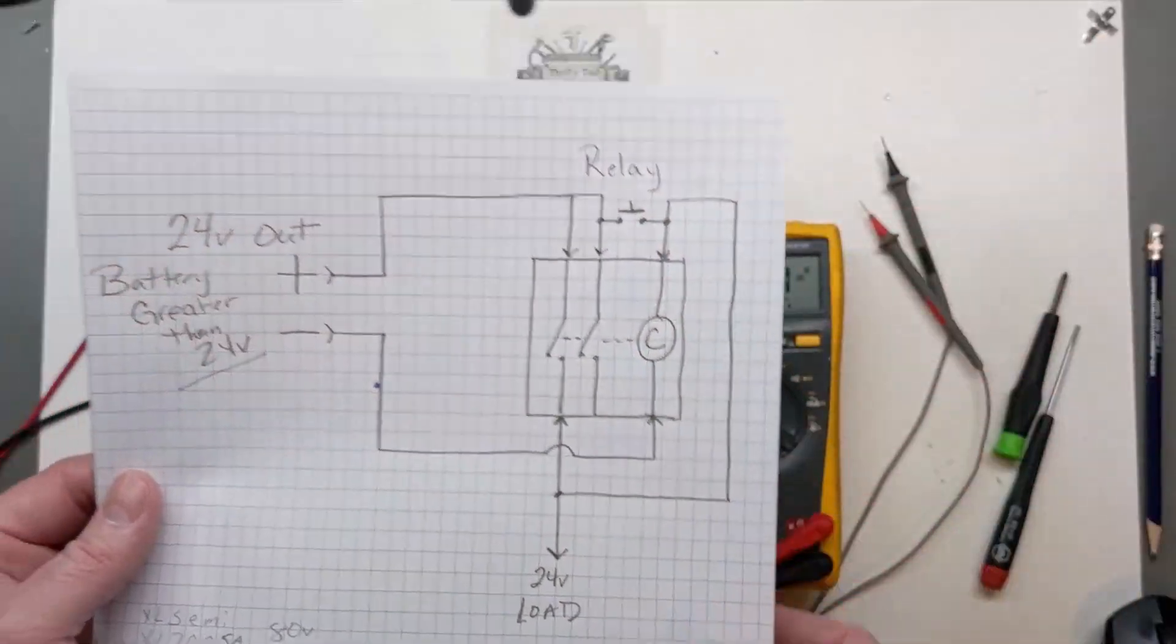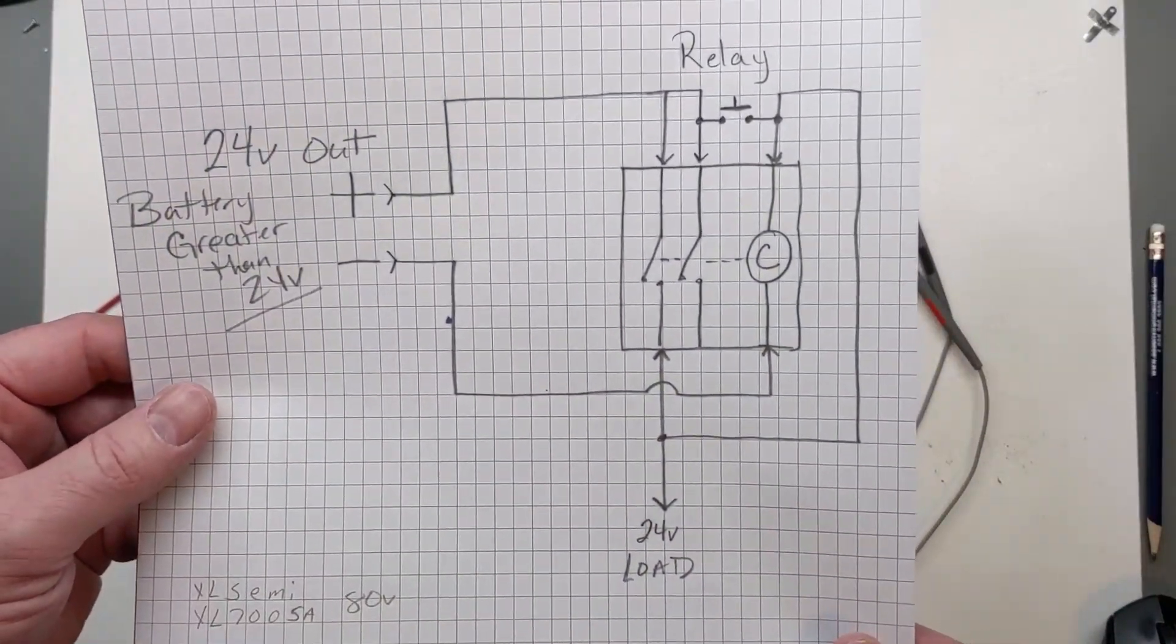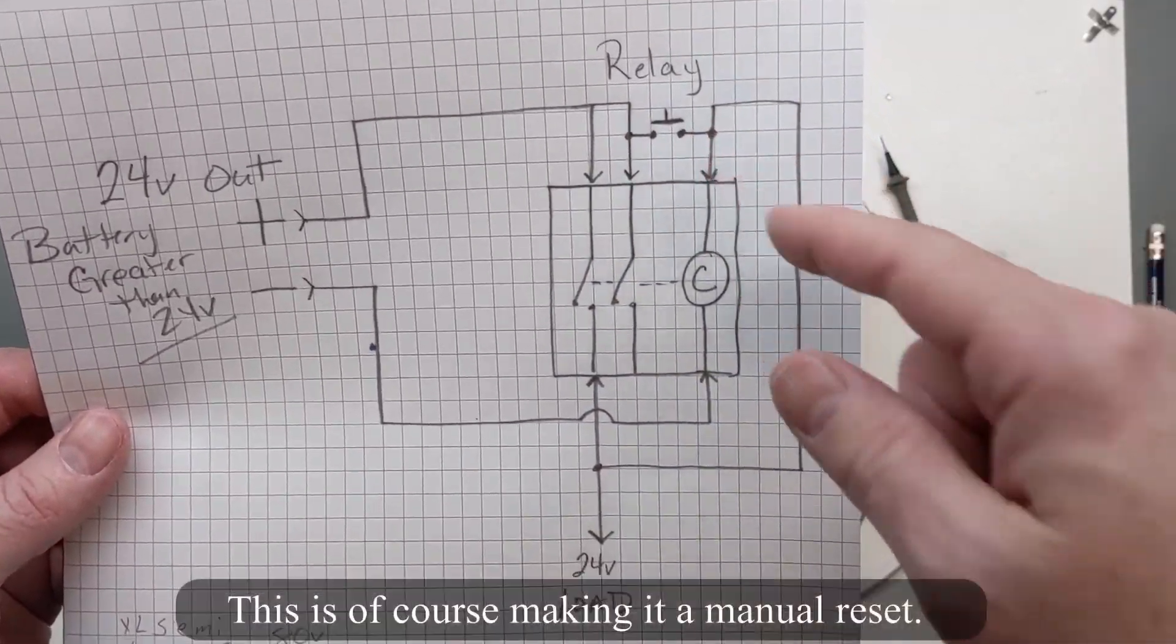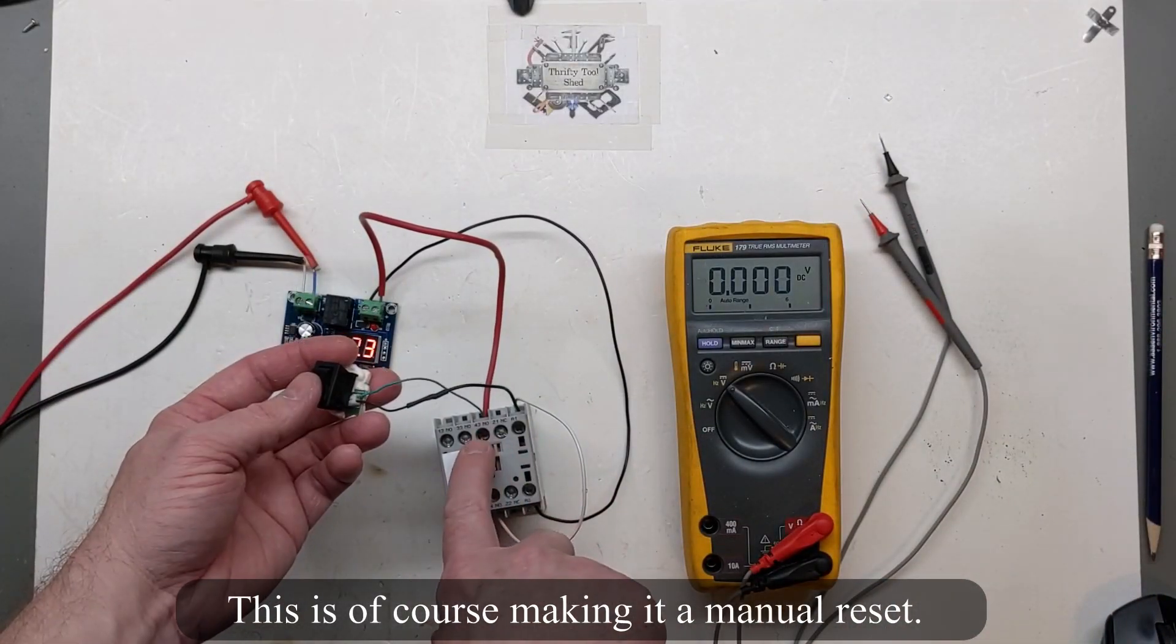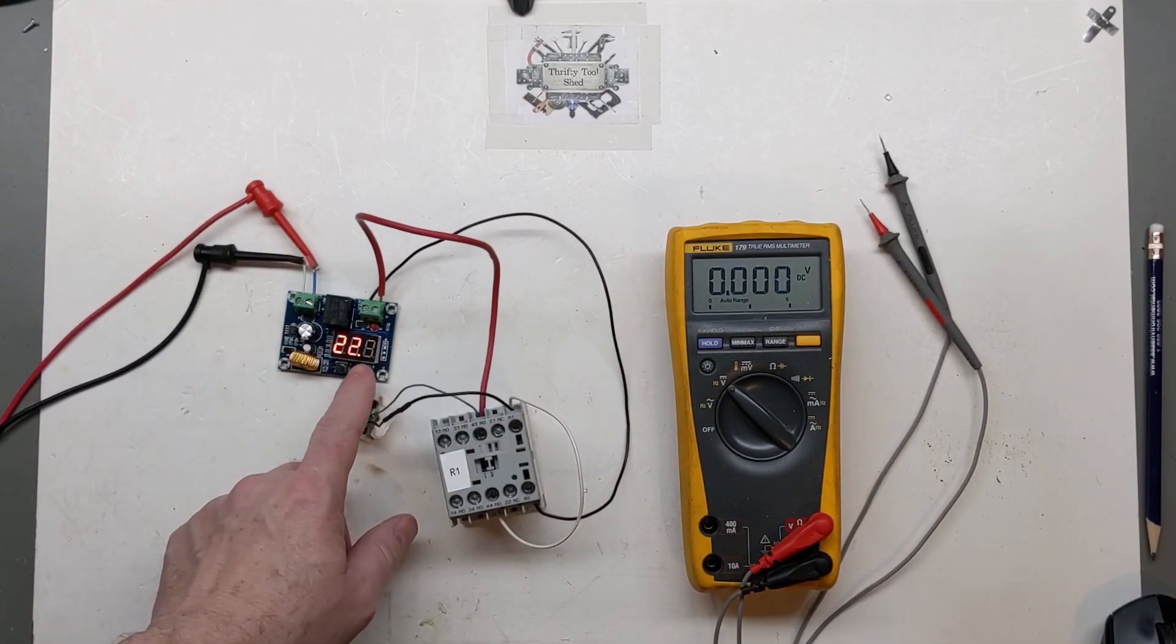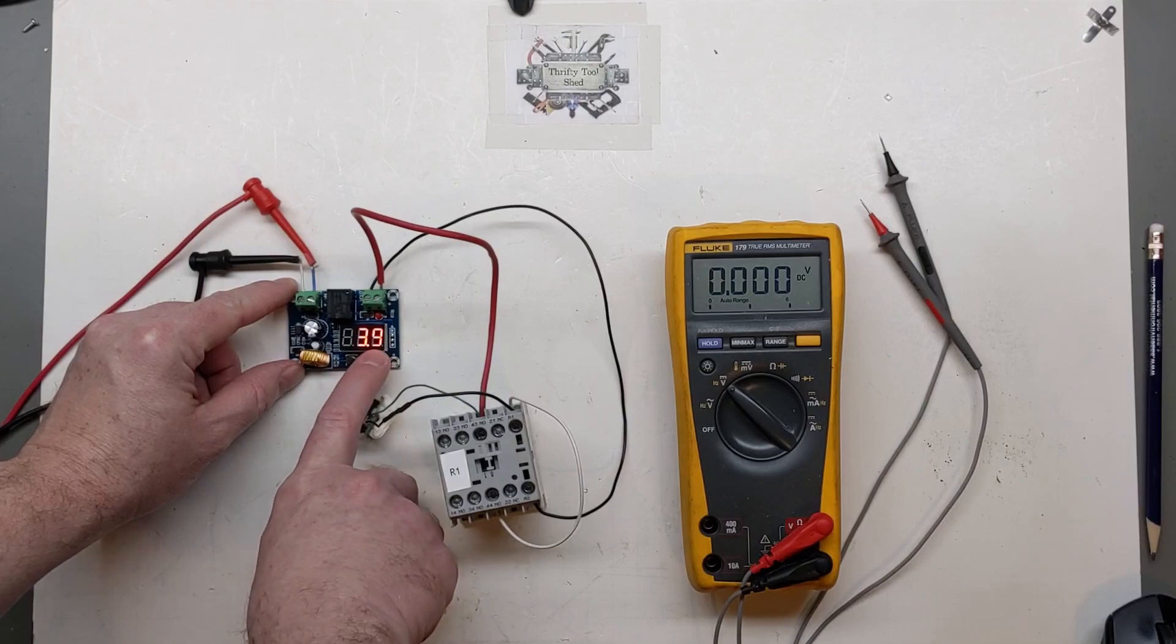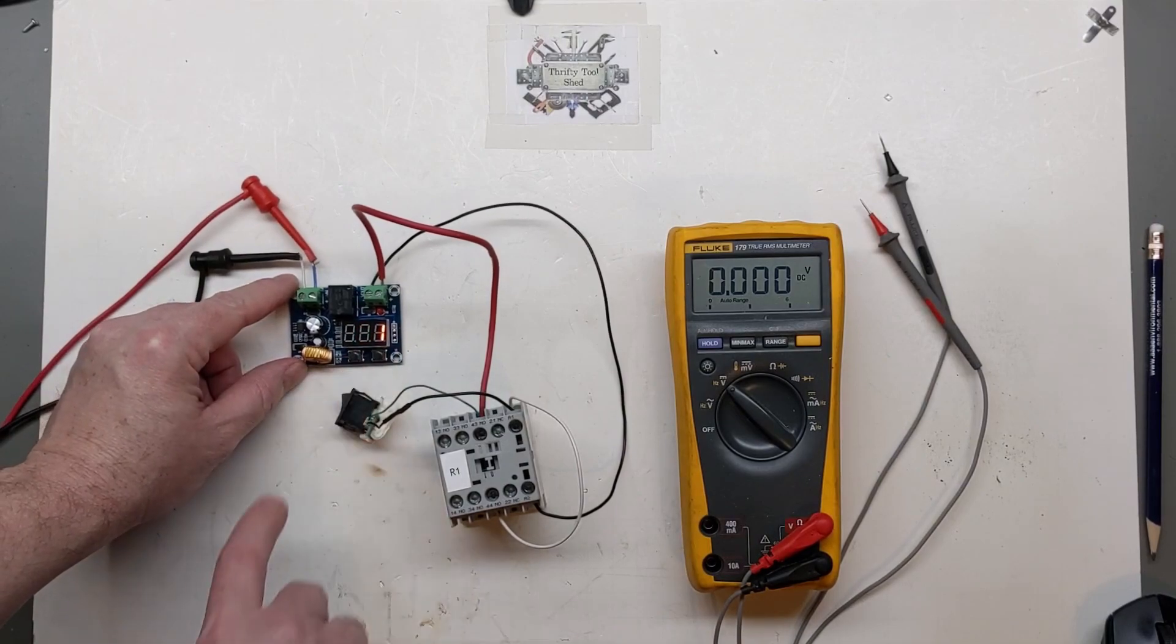Now back with the relay wired up really similar to this where we can jump over to our coil and our sealing or holding contacts that come around and pull the coil in. That's just a momentary switch that I had that I wired across my normally open contact to our coil. Below 24 volts it will not work. I'm going to take this all the way down as far as it'll go to 0.1.